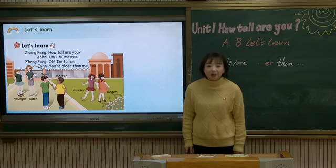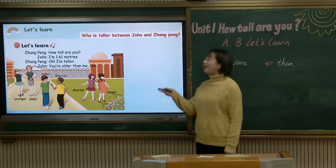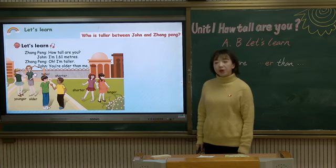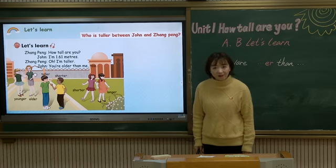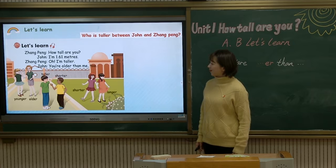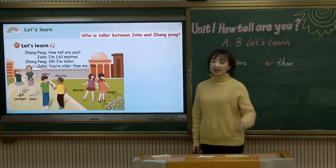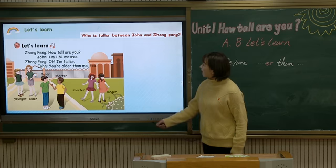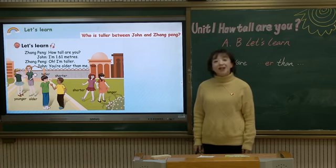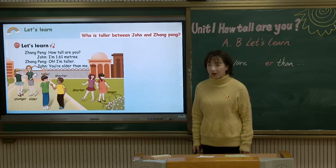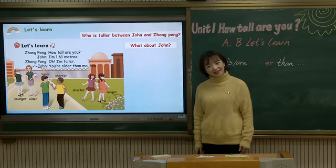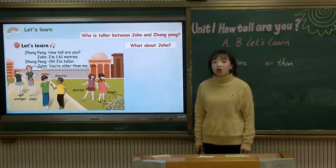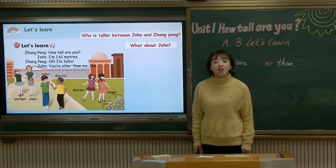Have you got it? Now please answer my questions. Who is taller between Jump and Jump Home? We know Jump Home is taller. Jump Home is taller than John. So what about John? You're right — John is shorter. John is shorter than Jump Home.